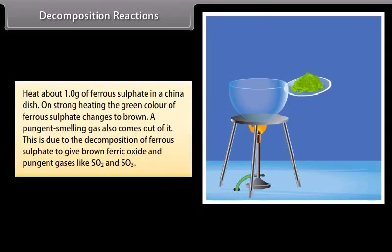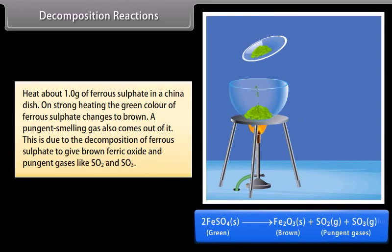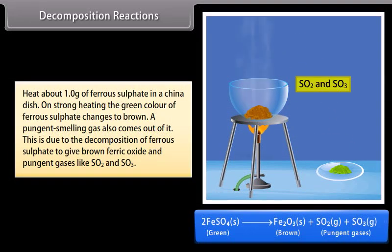Ferrous sulfate decomposition: Heat about 1.0 gram of ferrous sulfate in a china dish. On strong heating, the green color of ferrous sulfate changes to brown. A pungent-smelling gas also comes out. This is due to the decomposition of ferrous sulfate to give brown ferric oxide and pungent gases like SO2 and SO3.